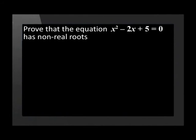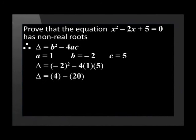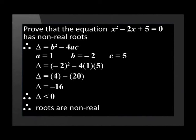Let us look at an example of applying this theory. Prove that the equation x squared minus 2x plus 5 equals 0 has non-real roots. We use the formula delta equals b squared minus 4ac, and substitute the values a equals 1, b equals negative 2, and c equals 5. Once we have substituted, we find that delta equals negative 16. Delta is therefore negative, thus the roots of the equation x squared minus 2x plus 5 equals 0 are non-real.